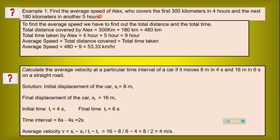Find the average speed of Lx, who covers the first 300 km in 4 hours and the next 180 km in another 5 hours. Average speed equals total distance divided by total time taken. Total distance is 300 plus 180 km, and total time is 4 hours plus 5 hours — that is 9 hours. So 480 divided by 9 equals 53.33 km per hour, which is the speed of Lx.